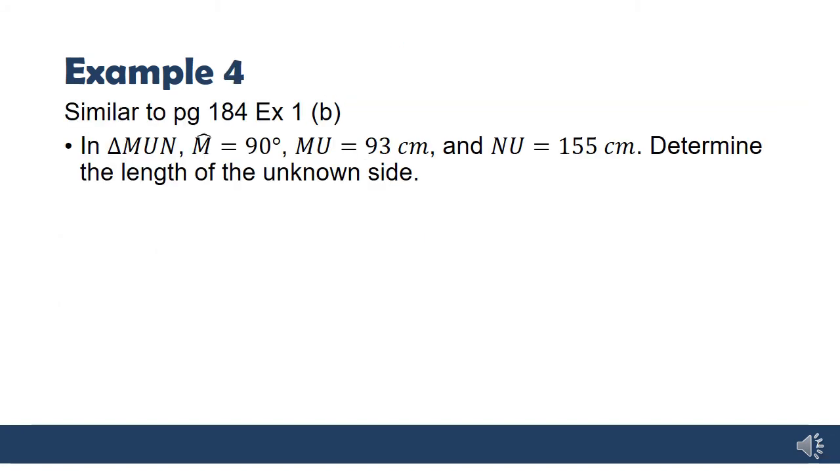The last example, this is similar to what you're going to do in your homework in exercise B. In triangle MUN, angle M is 90, and then we have two side lengths. So, we need to determine the unknown third side. Now, it's very difficult to do this without a diagram, because we need to be able to see where these side lengths specifically are. So, my first step is to draw the diagram.